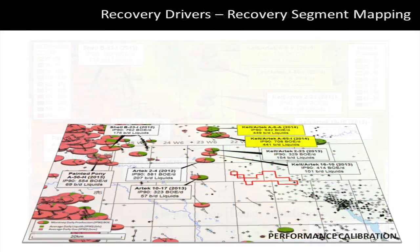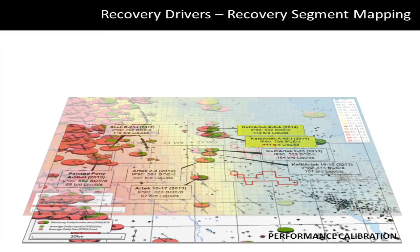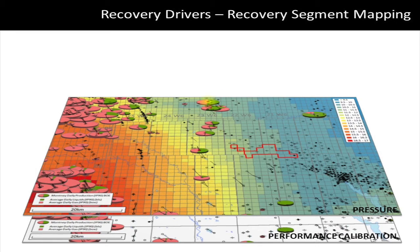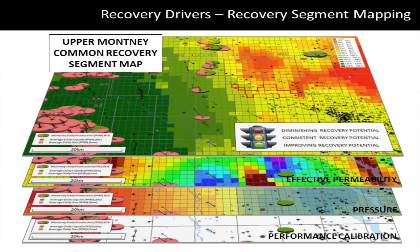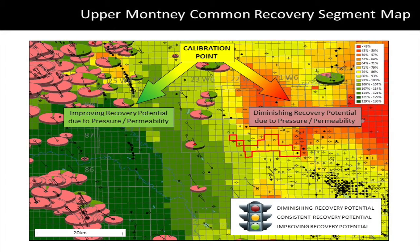We create a common recovery segment map using a weighted average of our effective permeability map and our pressure map — effective permeability and pressure being considered the primary geological drivers affecting recovery potential in the play. Our calibration point is the most recent wells being drilled in the liquids fairway. We look at the production performance of those calibration wells and examine how pressure and effective permeability change away from those wells. The common recovery segment map is an interpretation of where we consider production results will vary spatially from our calibration point due to differences in pressure and/or effective permeability.